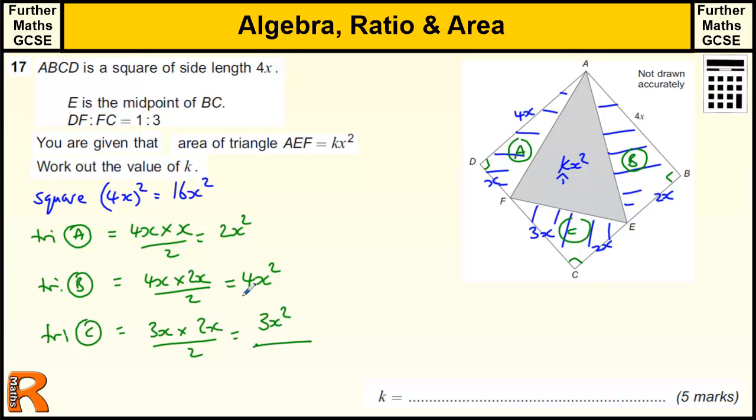So the total of our triangles is going to be 2x plus 4x is 6 plus 3, which is 9, so 9x squared.